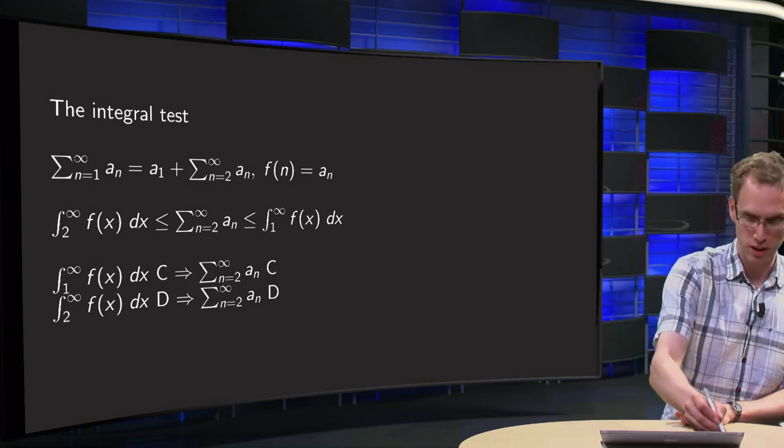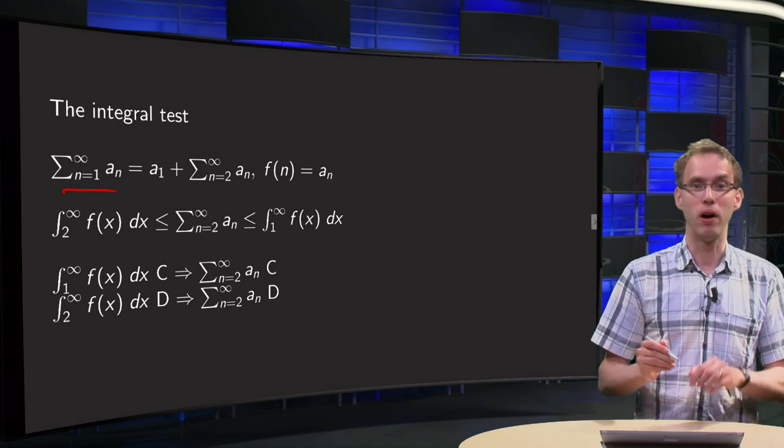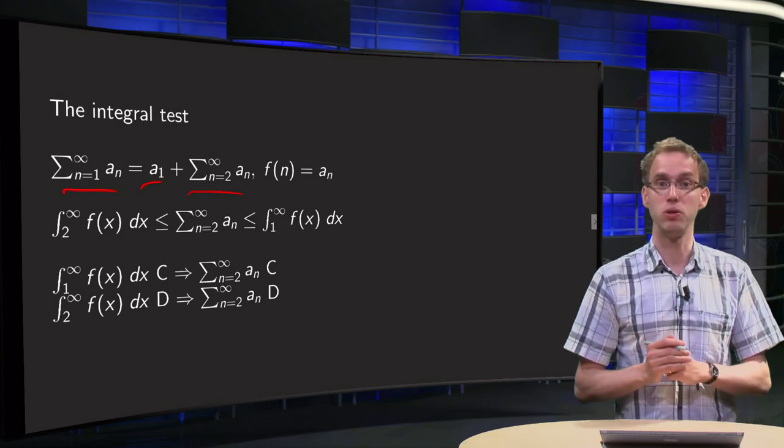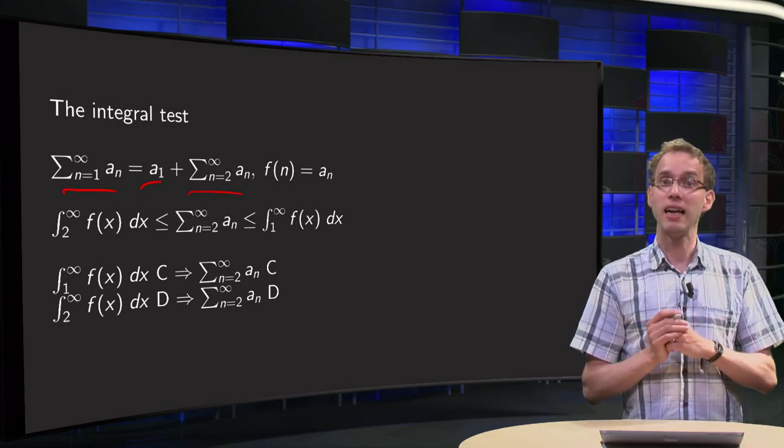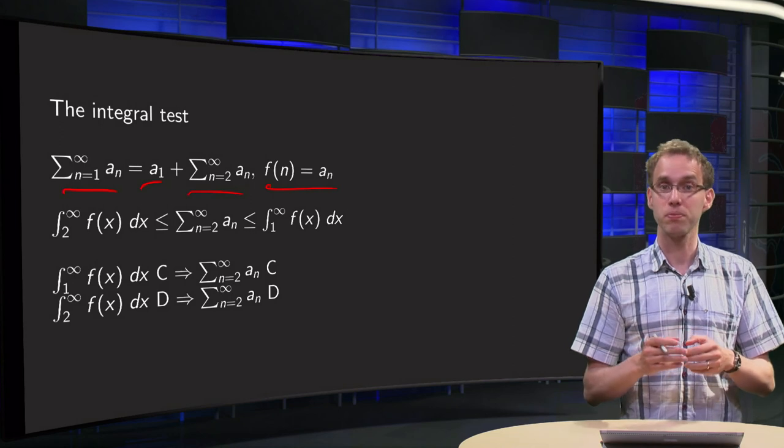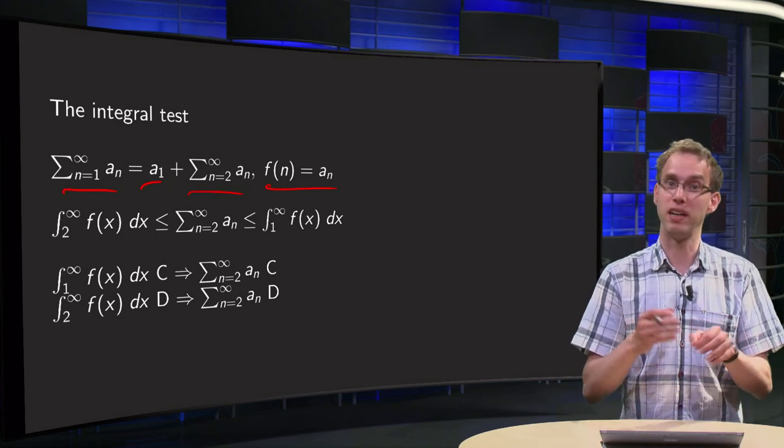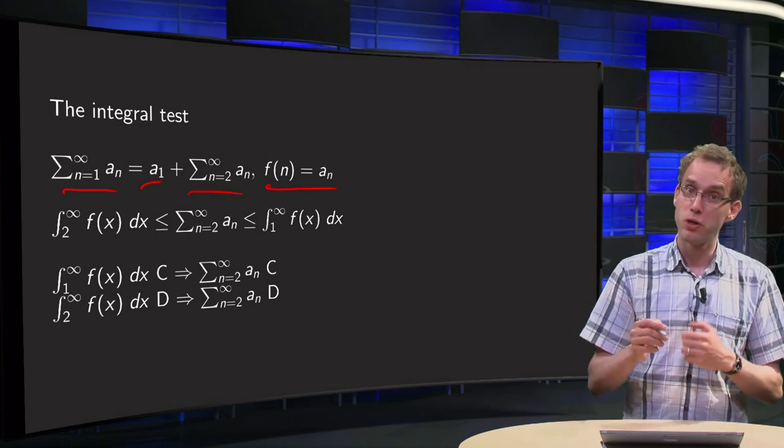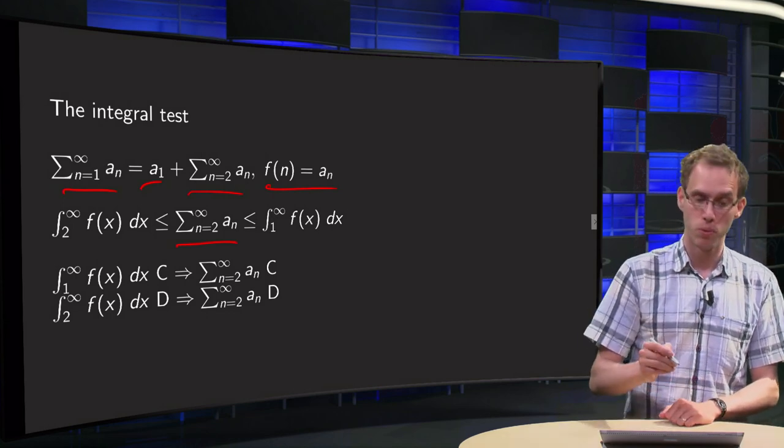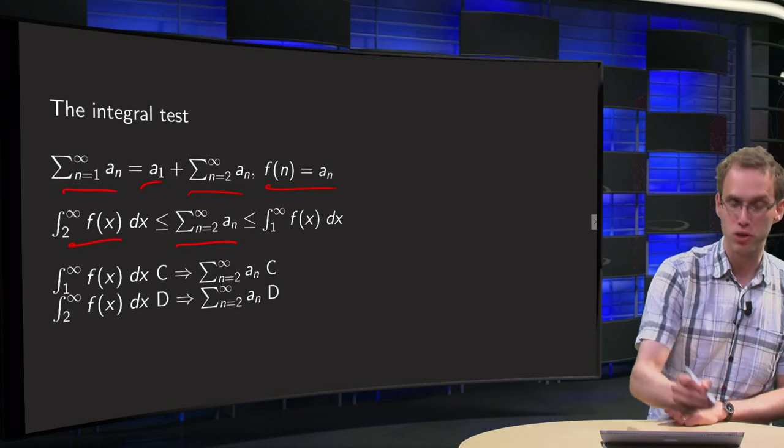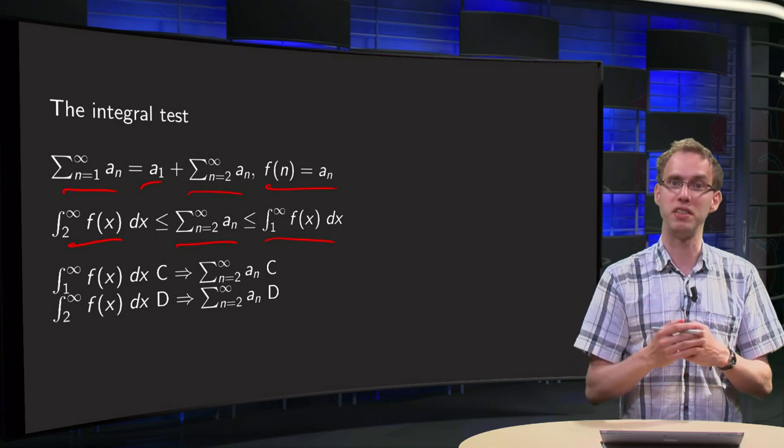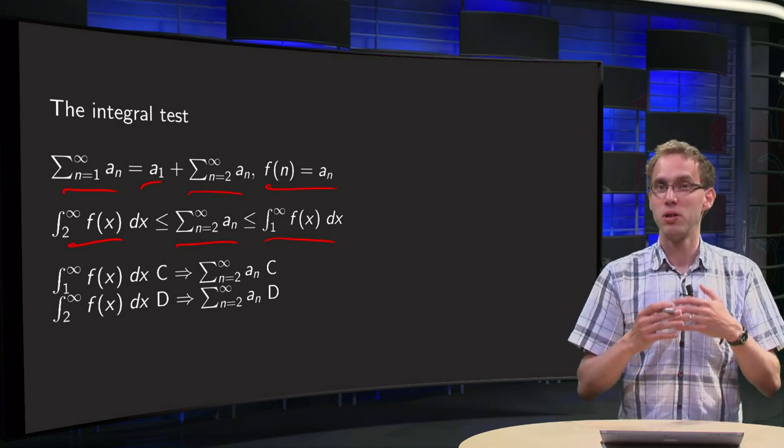So suppose we have some series sum from n=1 to infinity of a_n. I have to split up the first term a_1 and then sum from 2 up to infinity. And then we can define our function f(n) as usual, we define f(x) such that f(n) equals a_n. Now we can have two cases.